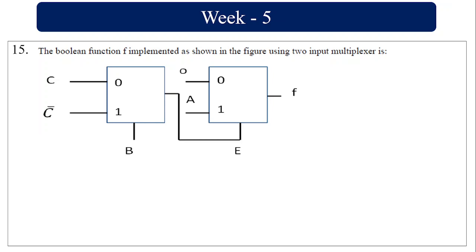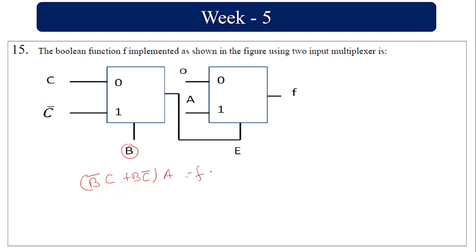The Boolean function F is implemented as shown using 2-input multiplexers. If selector A = 0 then one output path is selected; if A = 1 then another path is selected. The function F is equal to A·B·C̄.